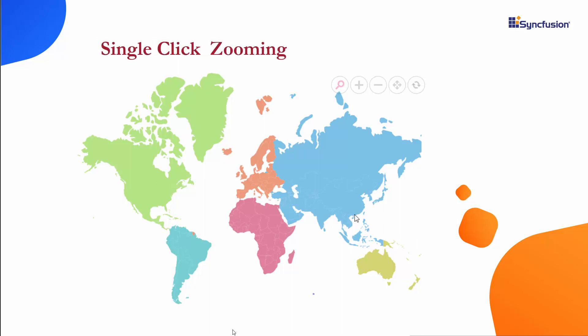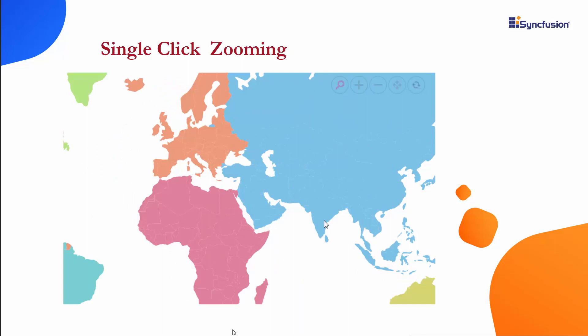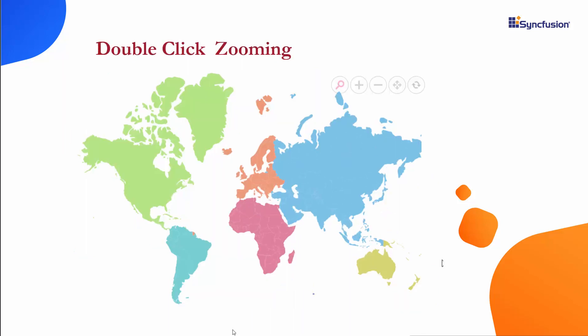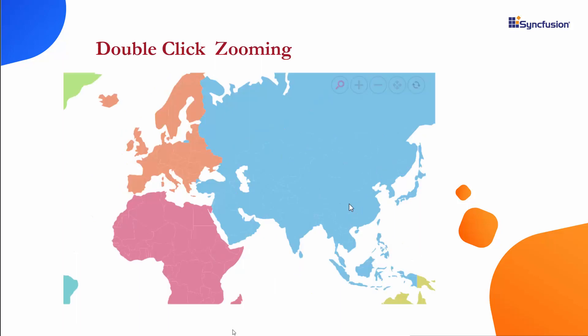In the fourth option, single-click zooming, you click the map shape area one time to zoom. In the final option, double-click zooming, click the map shape area two times to zoom.